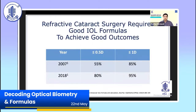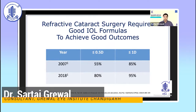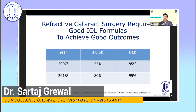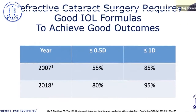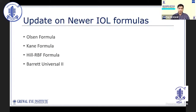Today, patients evaluate the outcome of surgery on the basis of unaided visual outcomes. Not just premium IOL patients, but every cataract patient expects clear, unaided distance vision. If we compare refractive outcomes post-cataract surgery between 2007 and 2018, the percentage of patients with residual spherical equivalent within half a diopter increased from 55% to 80% over that decade.